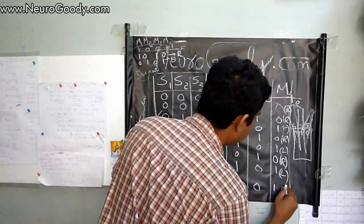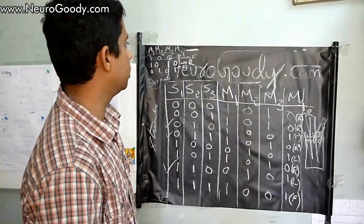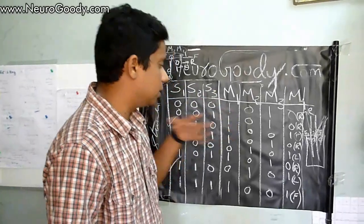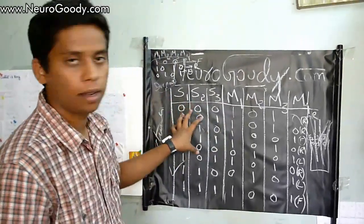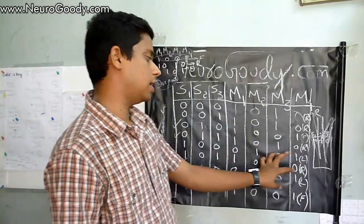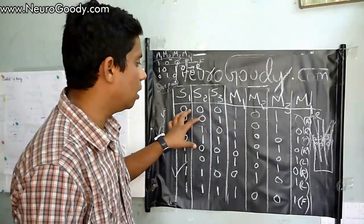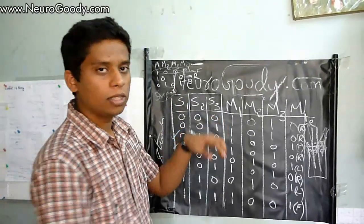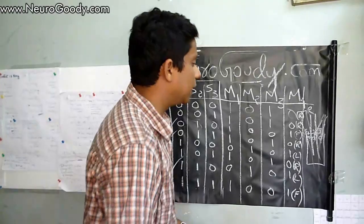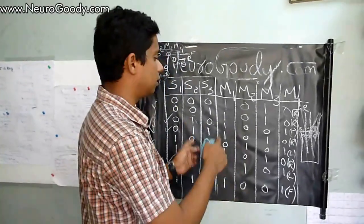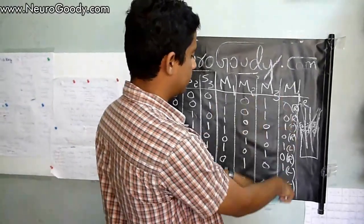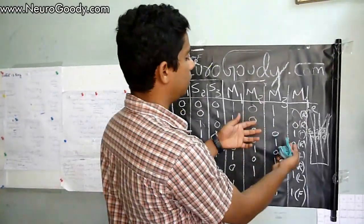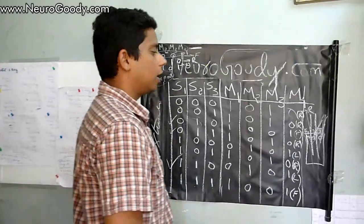So there you go — you have successfully learned how to write output binary values for a set of input variables. This is how you design your robot using logical operands and the method of logic, so that you will be able to implement it in logic gates as a hardware part. In the next part I'll show you how to implement this, how to get the inputs from the sensors, and how to actually implement it in logic gates as hardware.